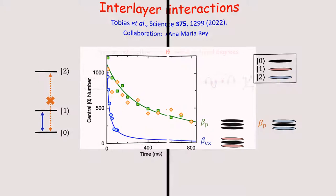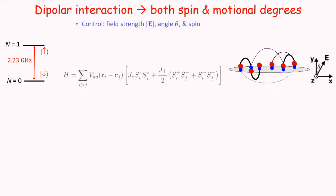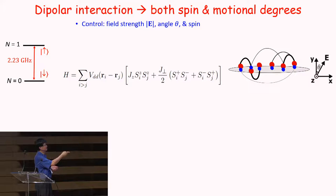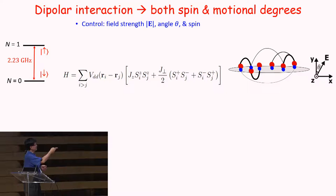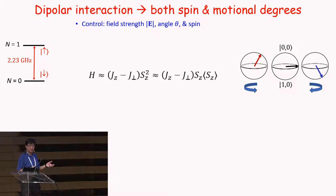This technique allows us to select single pancakes, study spin exchange between individual pancakes, and we are ready to do itinerant spin models. We turn on the dipolar interactions by either DC field or microwave field, creating coherence or both. Then you study the spin-half Hamiltonian where you have both the Ising interactions and the spin exchange interaction. Those S_z operators are operators of the entire spin with N particles with spin-half, so S = N/2. The spin is nothing but opposite parity of rotational states that you can address with microwave. We can control the system with both field strength or angle as well as individual spin state.